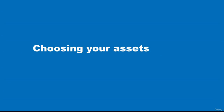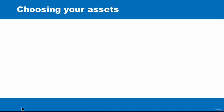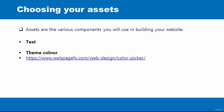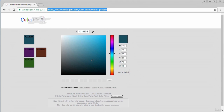Hello and welcome. In this video, I will introduce you to some assets you will need to develop your website. Assets are various components you will use in building your website. Starting with text — you need to know what text you want to use, for example paragraphs, titles, list items, and so on. You can choose a theme color using any free color picker tool, such as webpagefx.com. There are many color picker tools — just do a Google search.